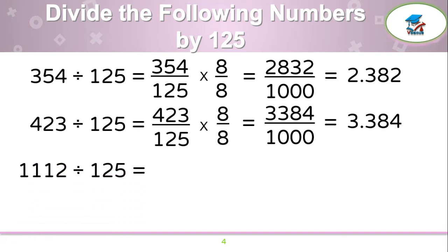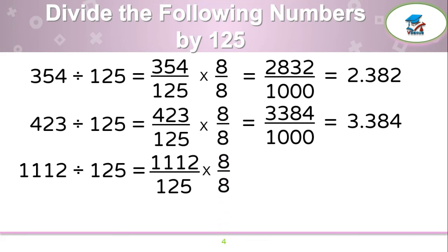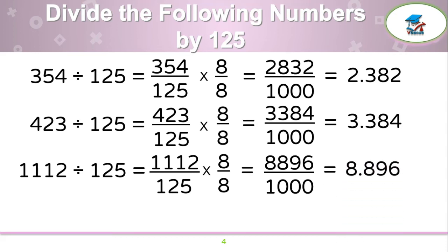One more example: 1,112 by 125. Write 1,112 over 125, which should be multiplied by 8 over 8. 1,112 times 8 is 8,896. Your answer will become 8.896.